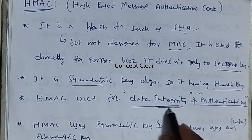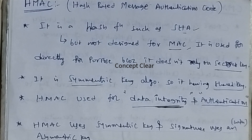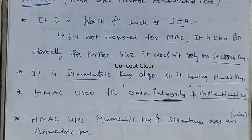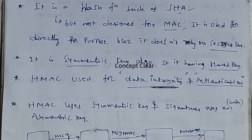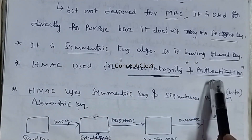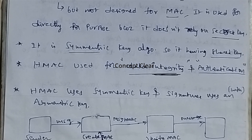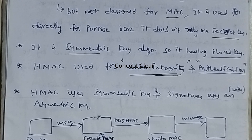Data integrity means no modification occurs while data is transferring between sender and receiver — the data should not be modified. Authentication means verifying the user with a user ID or password to confirm they are a legitimate, reliable user. HMAC uses a symmetric key and signatures.